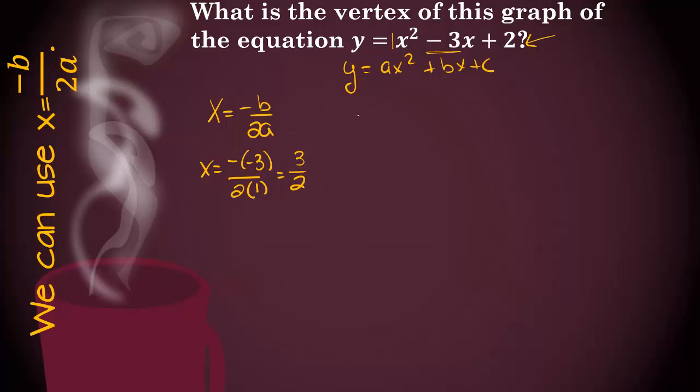Now we need to find the y value. So let me write the equation again. y equals x squared minus 3x plus 2. Now I'm going to substitute 3 halves in for all of my x's. So we'll have y equals 3 halves squared minus 3 times 3 halves plus 2.